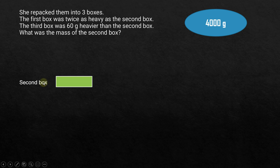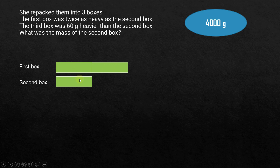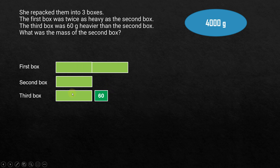We want to express the mass of the first box in terms of the second box. Let's draw a model: the second box is one unit. The first box is twice as heavy, so that's two units. The third box was 60 grams heavier than the second box, so the third box equals whatever the second box weighs plus 60 grams.